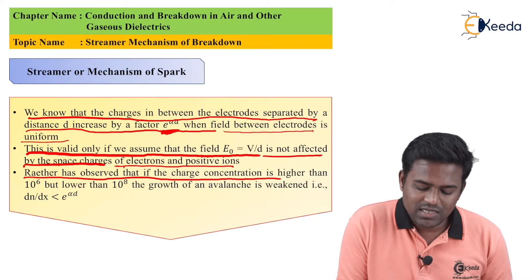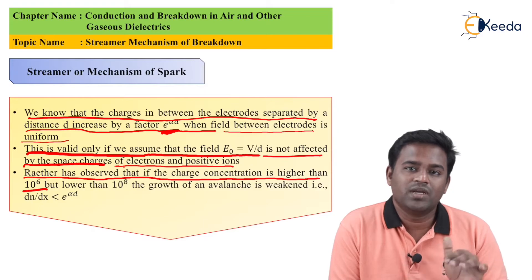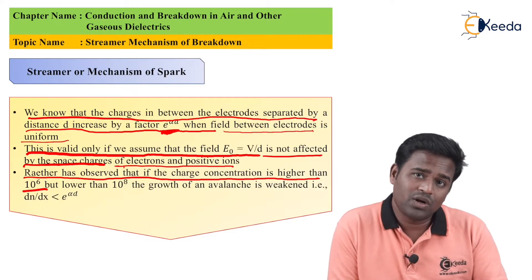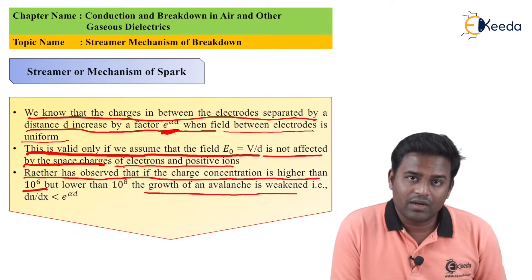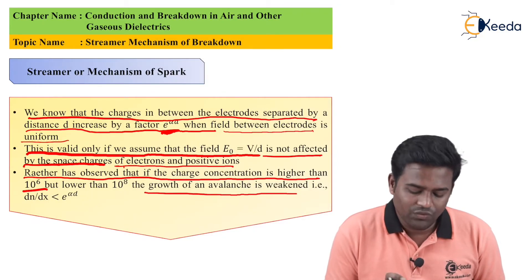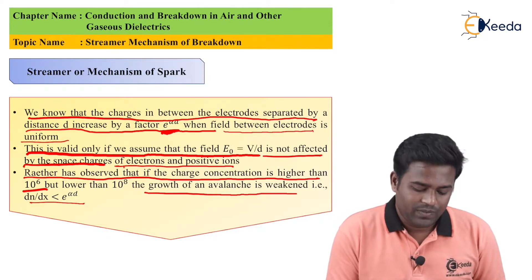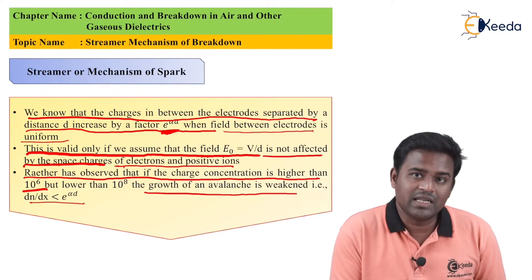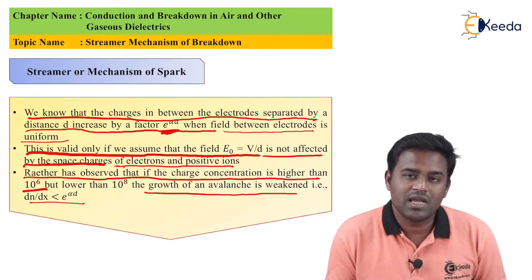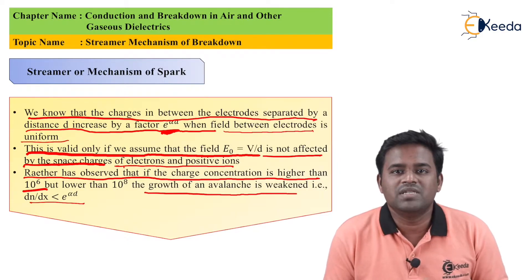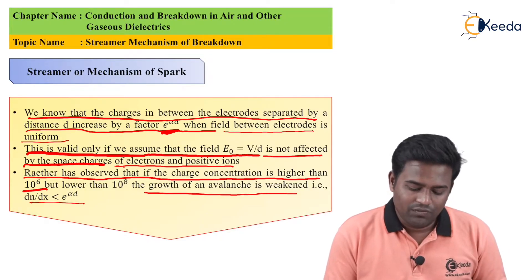If the charge concentration is higher than 10 raised to 6 but lower than 10 raised to 8, there will be growth of an avalanche, but that growth is weakened — meaning breakdown will happen in a weaker way. That is, dn/dx is less than e raised to alpha d. When charge concentration lies between 10^6 and 10^8, the breakdown phenomenon will be weakened.